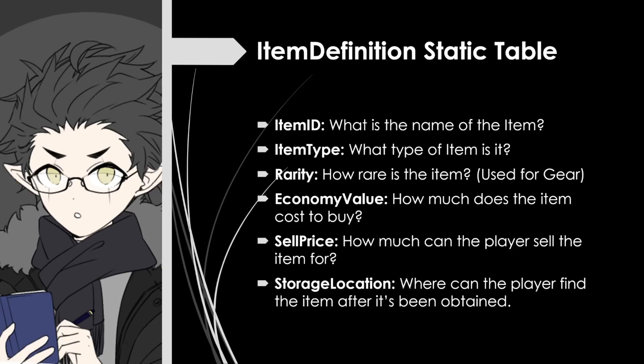First we have the Item ID — the name of the item, which is the name used when that item was added to the registry table. Next we have the Item Type, which answers what type of item this is — whether it's a broom, a potion, a piece of gear, or any other item available in-game. Next we have Rarity, which is how rare the item is, commonly used for gear — options include common, basic, rare, epic, or legendary. Finally we have Economy Value and Sell Price: economy value is how much the item costs to buy from a vendor, and sell price is how much the player gets if they sell that item.